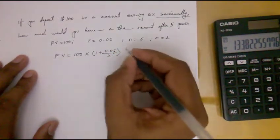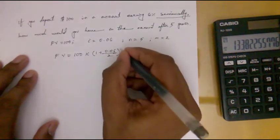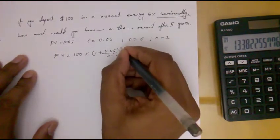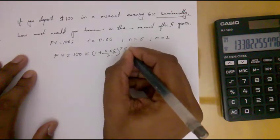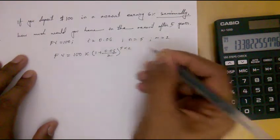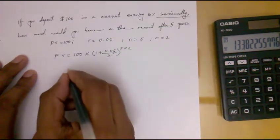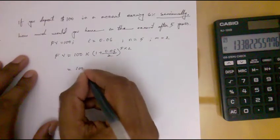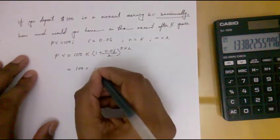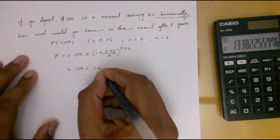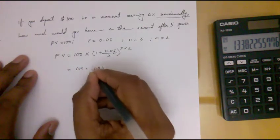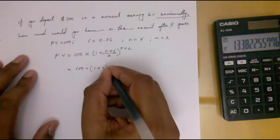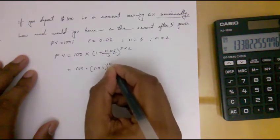So we can write future value equals one plus 0.06 divided by two, to the power of n times two. This simplifies to 1.03 to the power ten.